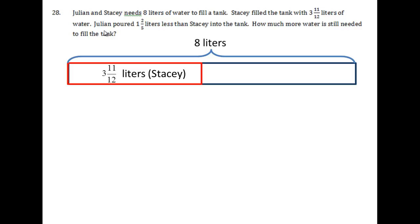Now don't rush with reading this next sentence, because it does not say that Julian poured 1 and 2 fifths liters of water. It says Julian poured 1 and 2 fifths liters less than Stacey. I do know Julian put something into the tank, but I don't know what that is yet, and I know what I'm solving for in the end is how much water is still needed to fill the tank after Julian and Stacey put their water in. But as many of you recognize, the first step is to figure out how much Julian put in, and this is the key sentence that's going to tell us that.